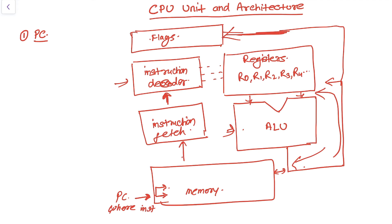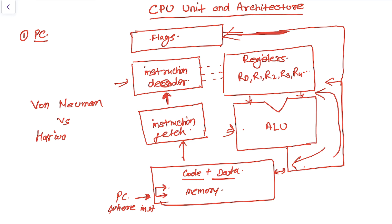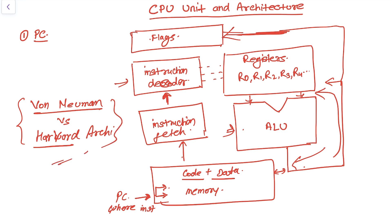Another question is: what is the architecture by which the CPU transfers data from memory to registers, fetches code, and also fetches data — since memory holds both code and data? There is an architecture known as Von Neumann architecture, and another very famous one known as Harvard architecture. In the next video we will discuss the differences between Von Neumann and Harvard architecture.